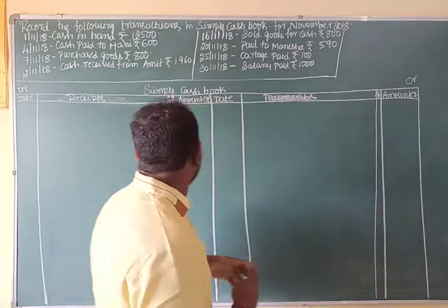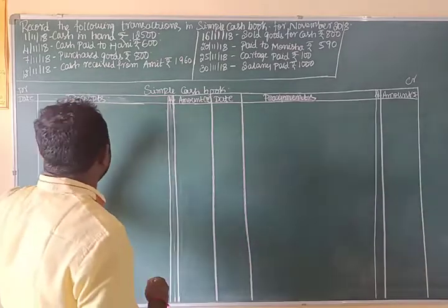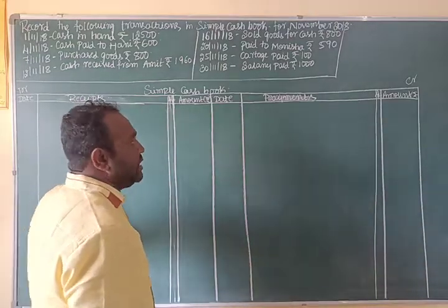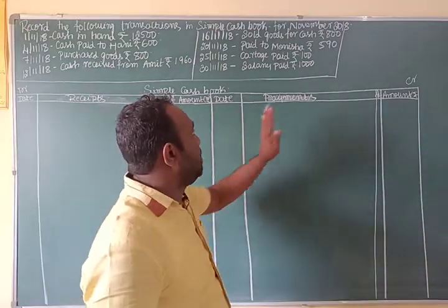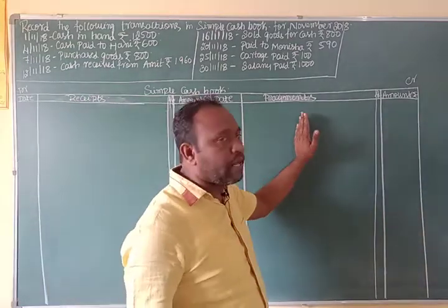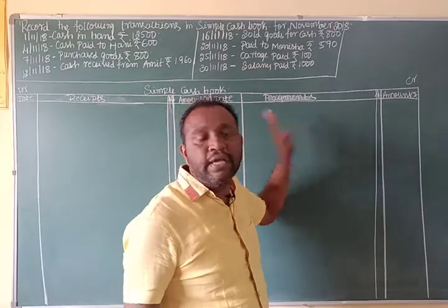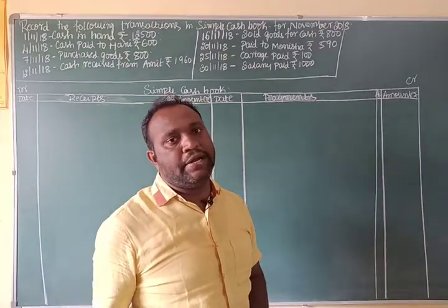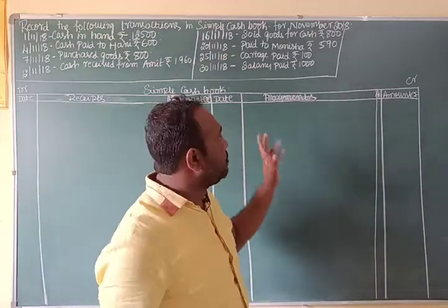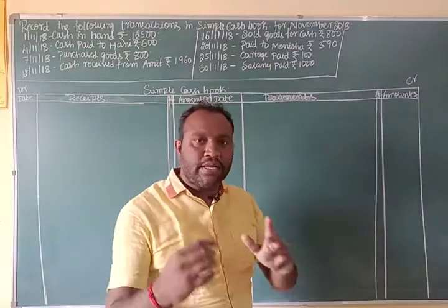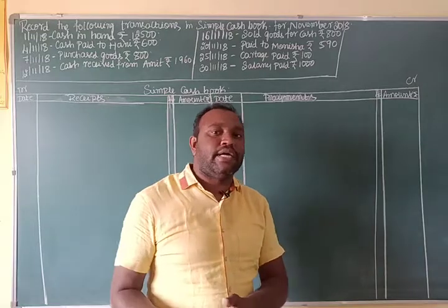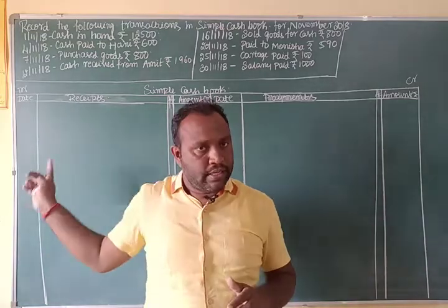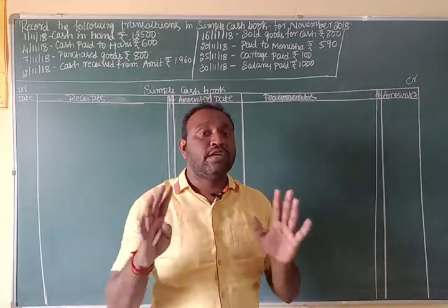When we receive cash, we make an entry on the debit side. When payments are made, we record them on the credit side. So, if paid — credit side; if received — debit side.